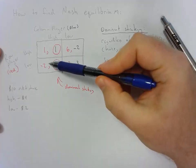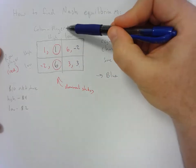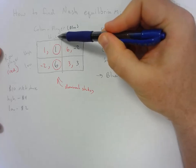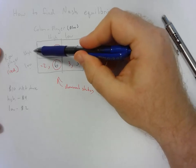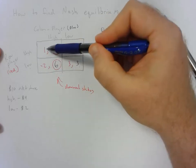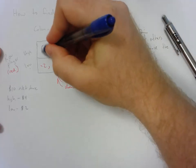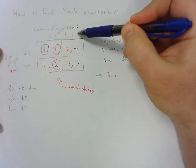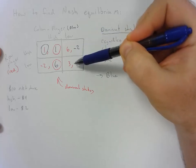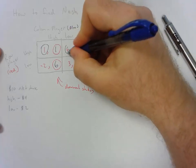Now let's consider the row player. Imagine the column player decides to do high advertising. Okay, so the row player in this instance can either do high advertising or low advertising. Do they want 1 or negative 2? Well, obviously, they'll choose 1. Now imagine the column player does low advertising. Do they want 6 or 3? Well, obviously, they want 6.